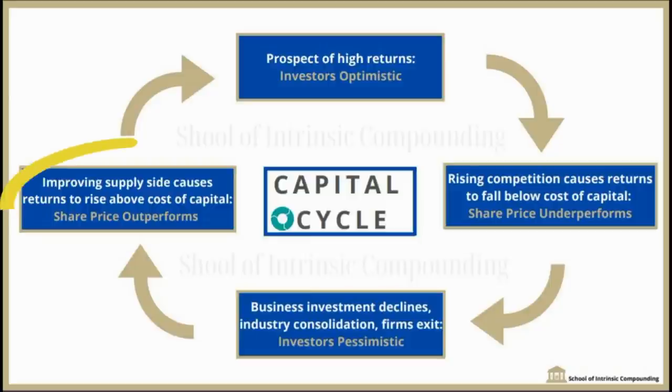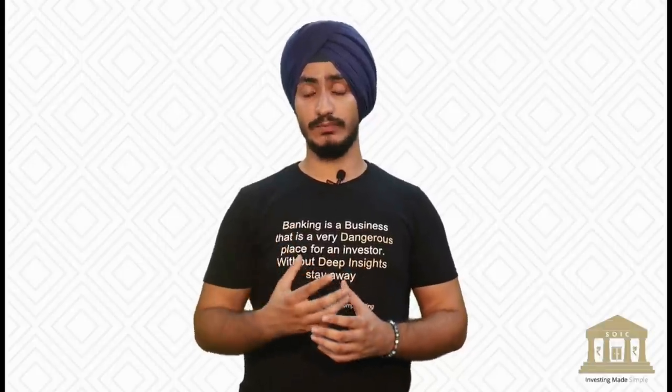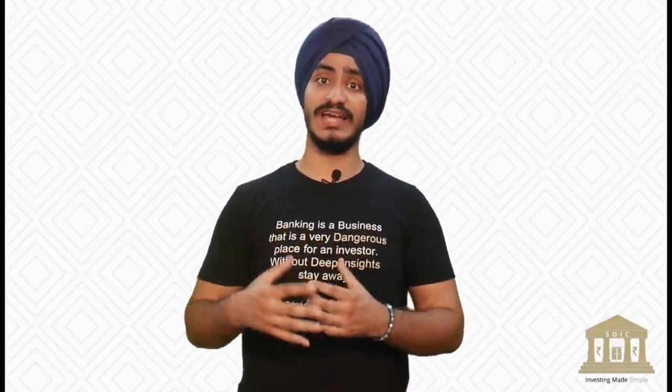In the fourth stage, consolidation starts happening. Only efficient players survive in the industry, and because competition is finished on the supply side, efficient players start making good returns on capital. Then the whole cycle goes back in the same fashion. Most businesses in capitalism experience these capital cycles, because businesses with competitive advantage are more of an exception rather than the norm — not more than 30-50 companies in the last 2 or 3 decades have consistently created wealth. The reason lies in capital cycles.